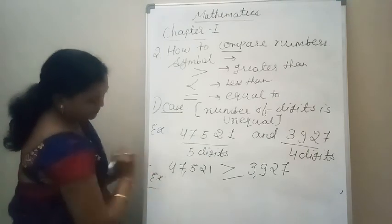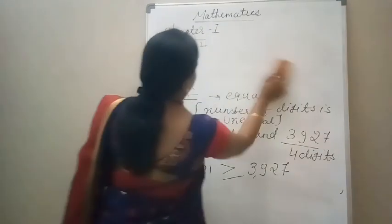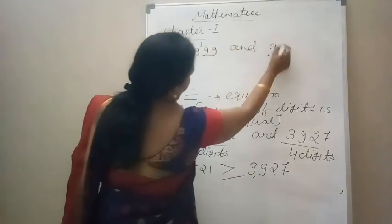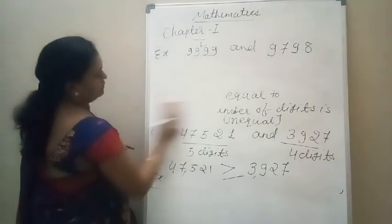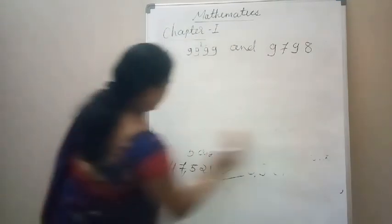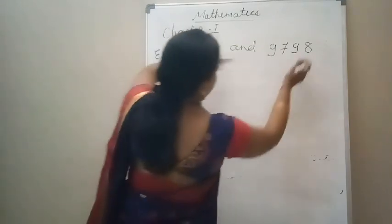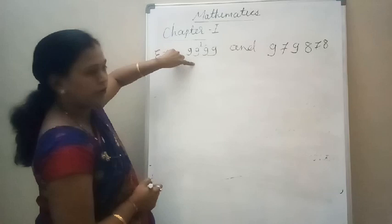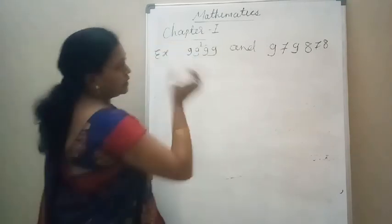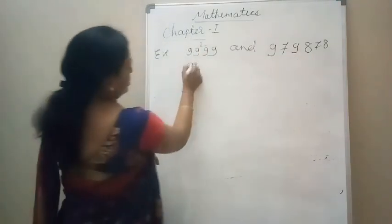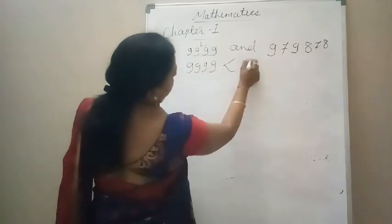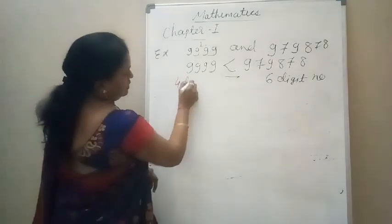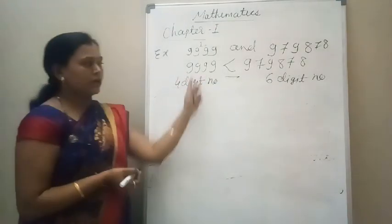One more example: 999 and 9,79,878. This is a 3-digit number and that is a 6-digit number. By condition number 1, when two numbers have unequal digits, the number with more digits is automatically bigger. So, 999 is less than 9,79,878.